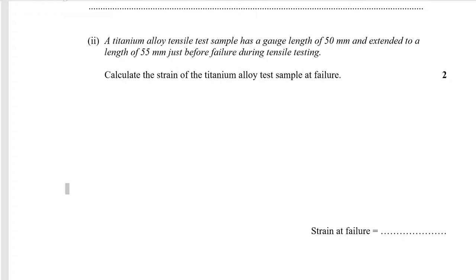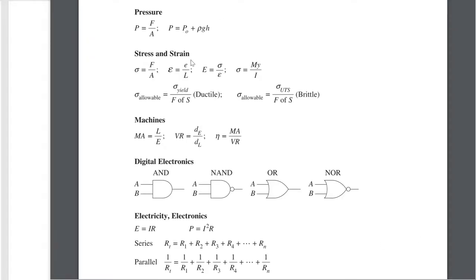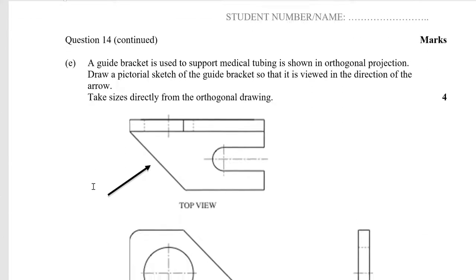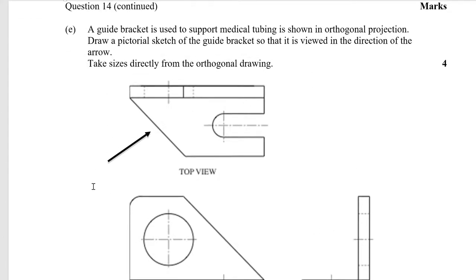Actually the simpler answer: strain equals extension over original length — E over L, or written as ΔL over L₀, which is how it's written at university. Just remember that extension is the change in length and L is the original length.